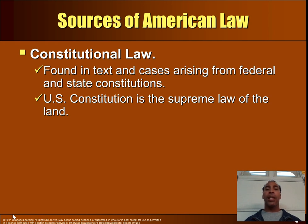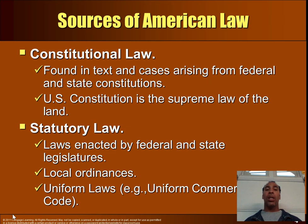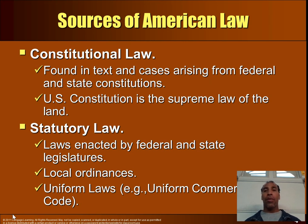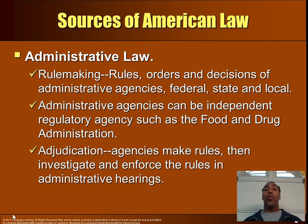Sources of American law: You have constitutional law, found in cases arising from federal and state constitutions. The U.S. Constitution is known as the supreme law of the land. Then you have statutory law — laws enacted by federal and state legislatures. Local ordinances cover things like parking and water, typically managed at the state and city level. Uniform laws such as the Uniform Commercial Code govern trade and commerce in interstate transactions. Administrative law involves rule-making, orders, and decisions of federal, state, and local administrative agencies.